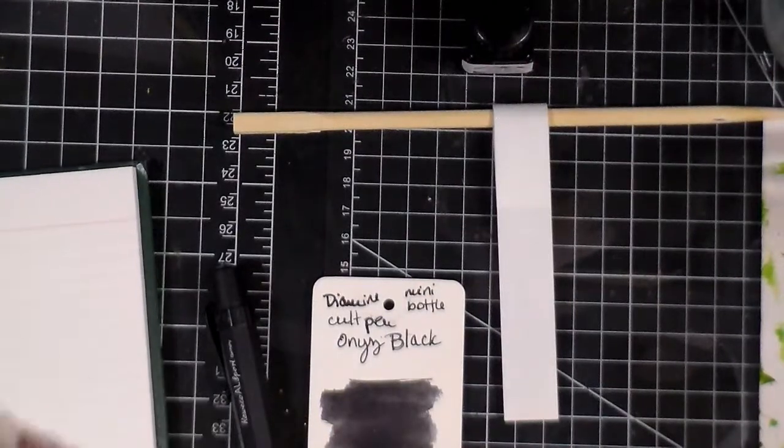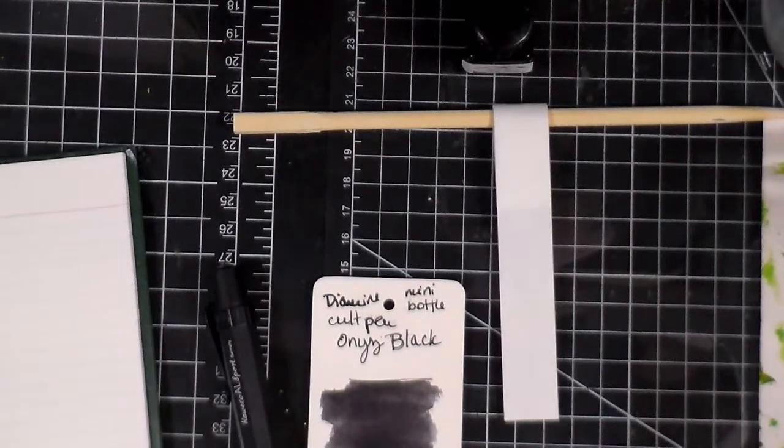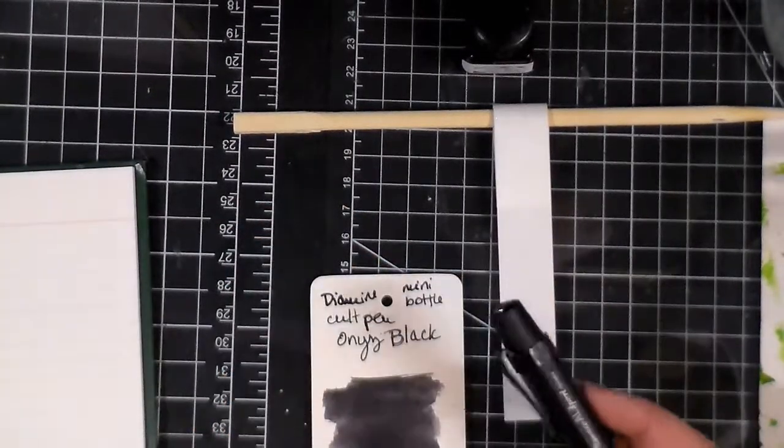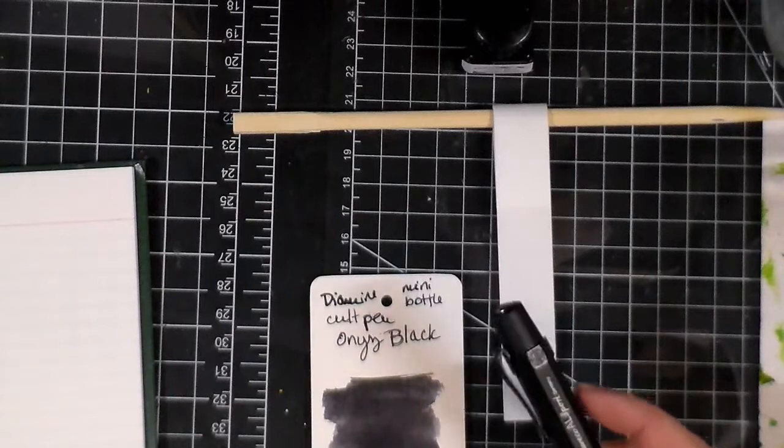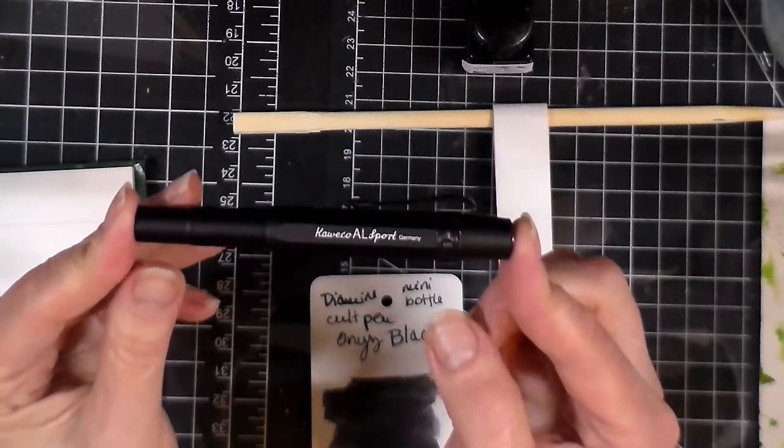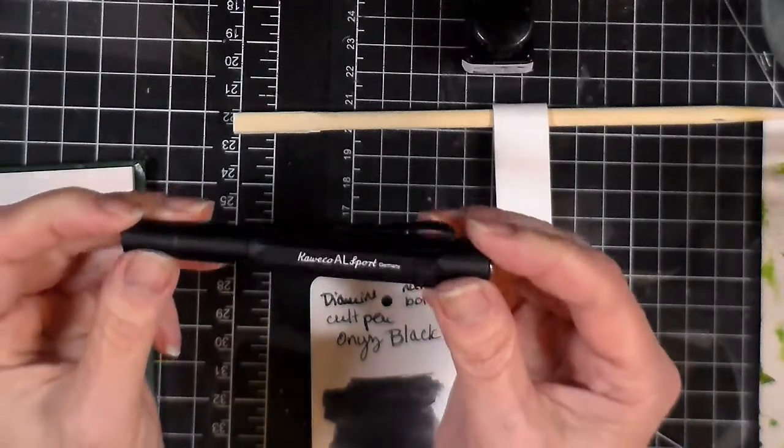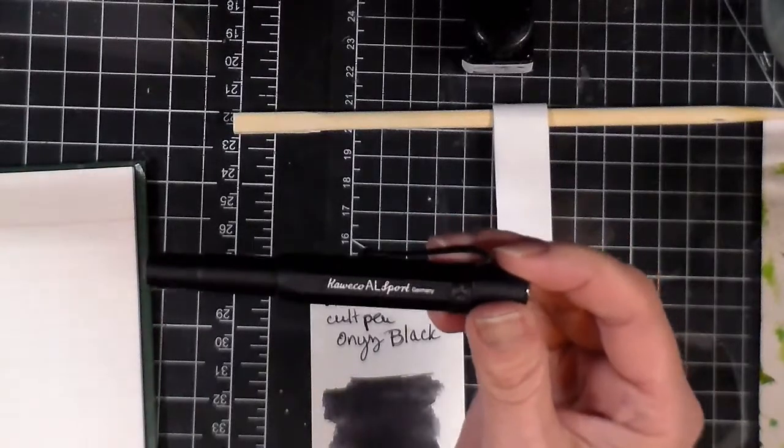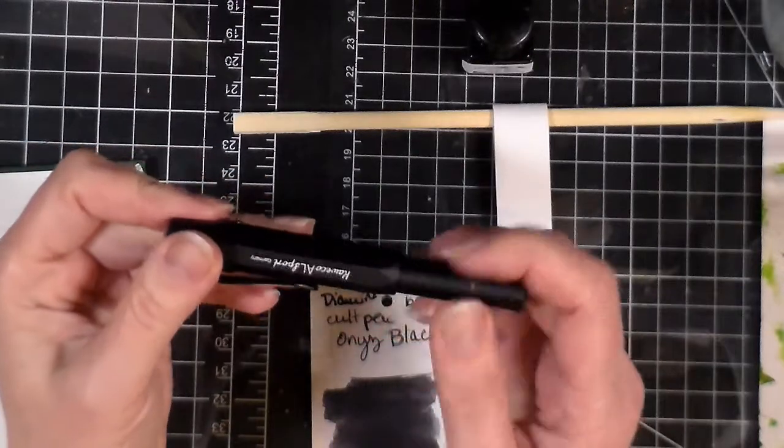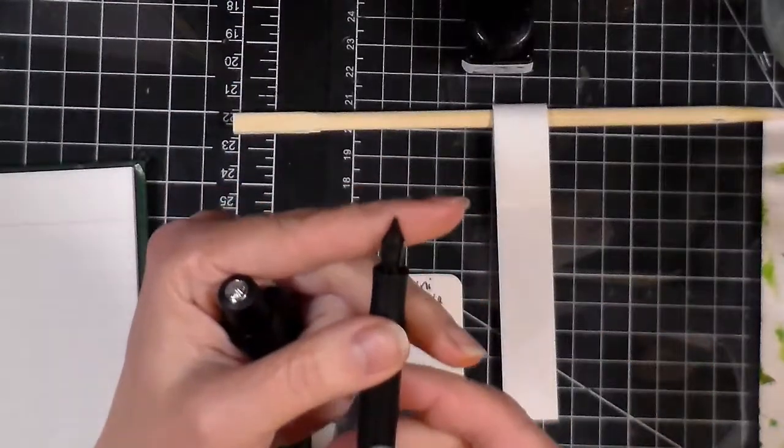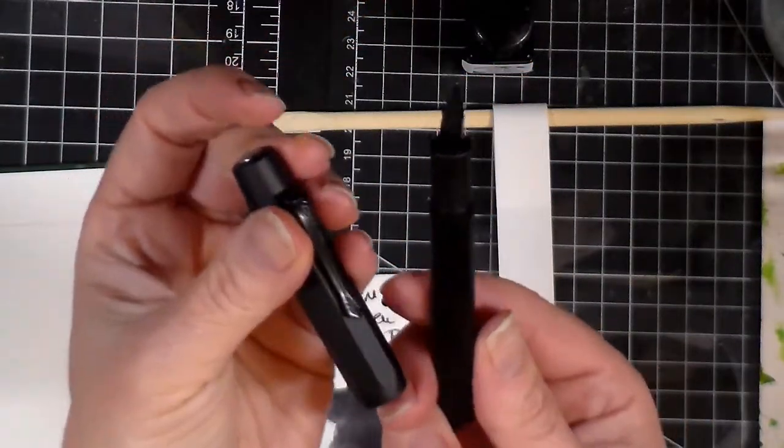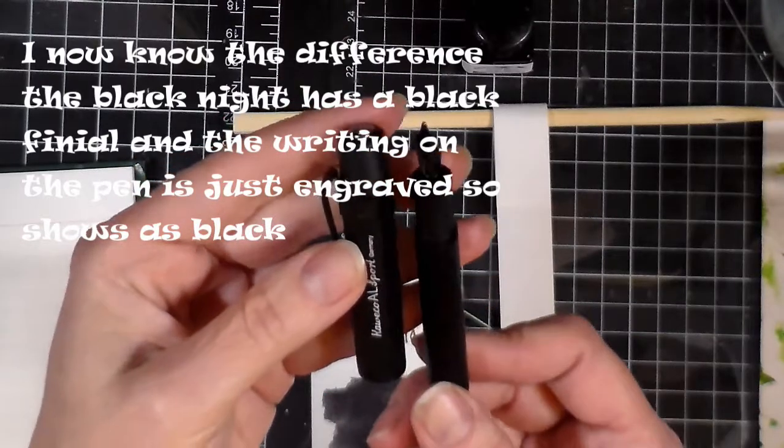Today we have a black and it's the Diamine Onyx Black. I'm using my Kaweco Al Sport All Black and it's a broad nib. This pen here is one of the pens that I got in Europe because the ones over here were all sold out. It's a special pen that's all black and matte.